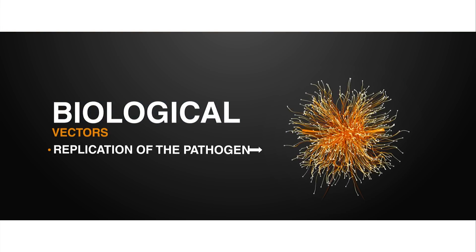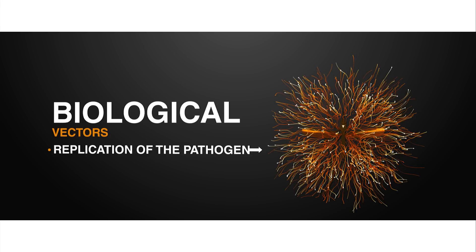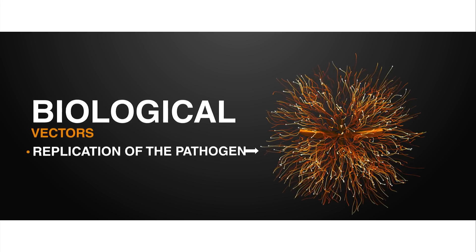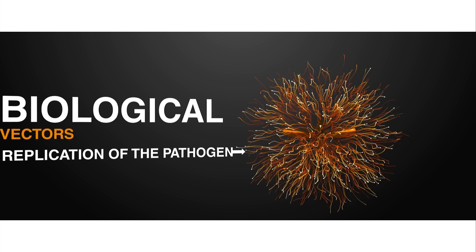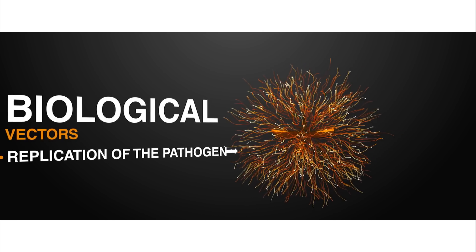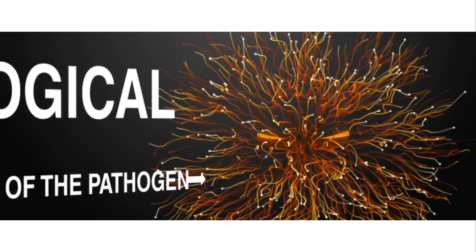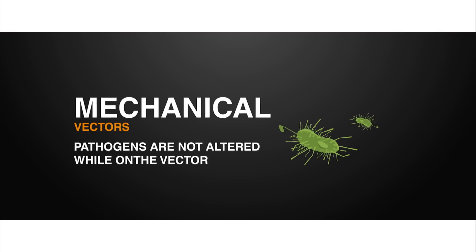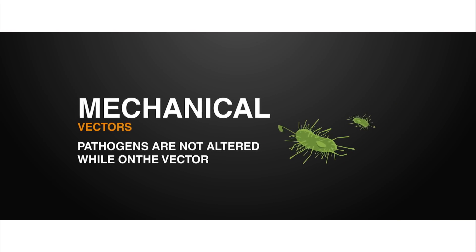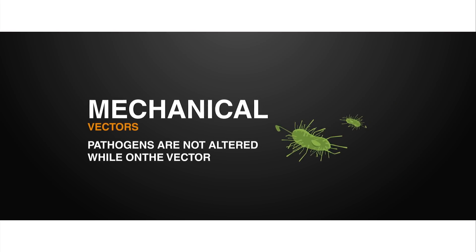The disease agent and the biological vector typically have a long-standing ecological relationship and are usually persistently infected with the agent. A mechanical vector, on the other hand, is a vector that carries the pathogen, but the pathogen is not altered while on the vector.